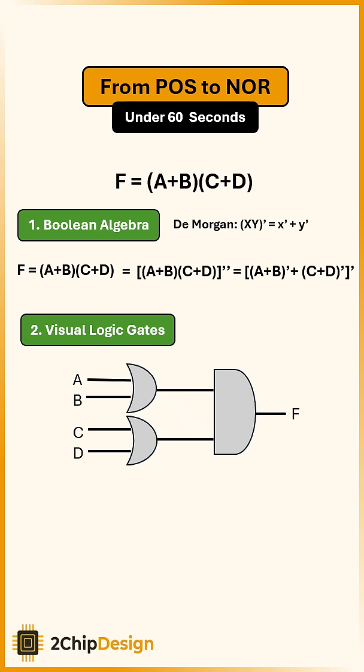Now let's see it visually. We start with two OR gates feeding into an AND gate.